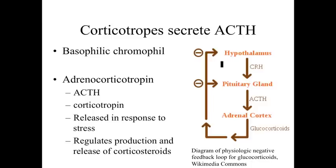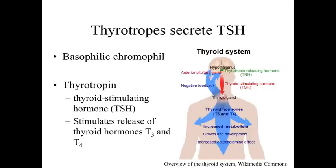The corticotropes secrete ACTH — a basophilic chromophil that releases adrenocorticotropin, also known as corticotropin. This is a hormone released in response to stress, and it regulates the production or release of corticosteroids by the adrenal cortex, which we'll talk about in an upcoming endocrine system lecture. The thyrotropes secrete TSH, thyroid stimulating hormone, also referred to as thyrotropin. It essentially activates the thyroid and stimulates the release of the thyroid hormones T3 and T4.